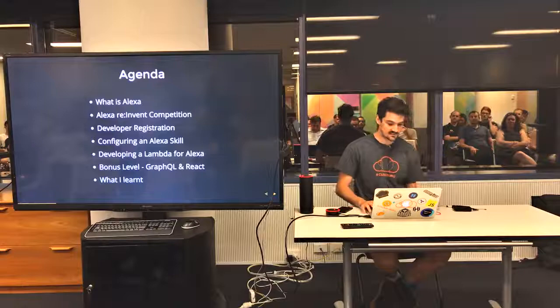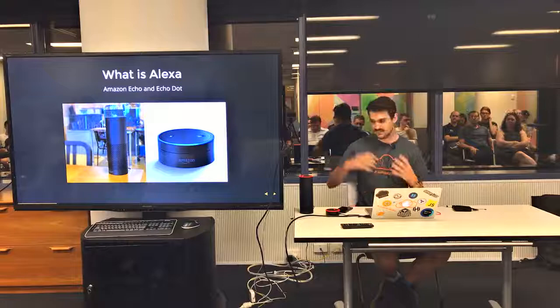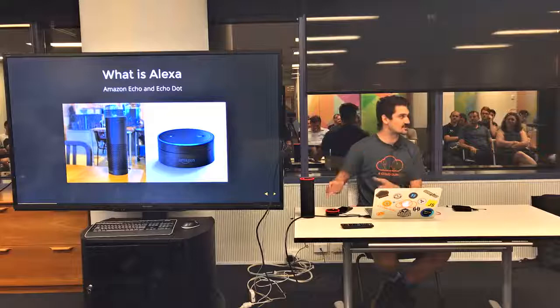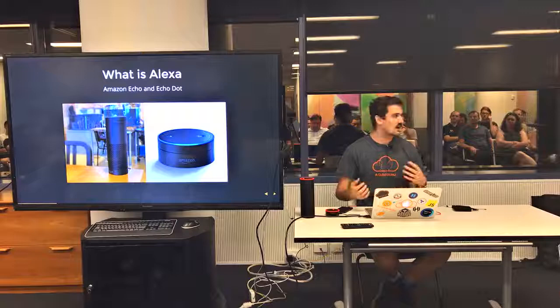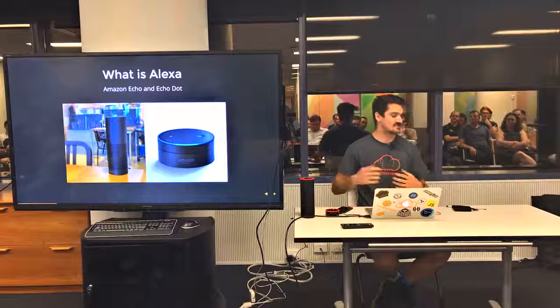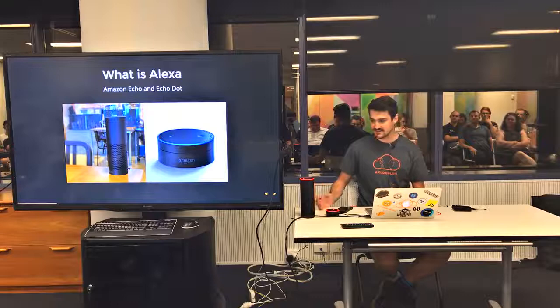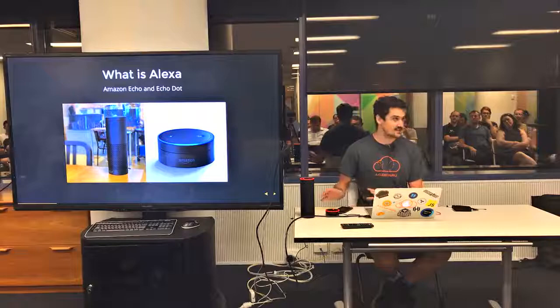So what is Alexa? Alexa is the thing inside these two devices here — the Amazon Echo and the Amazon Echo Dot. It's kind of like IoT meets chatbot. It's a conversational UI widget that allows you to talk to these devices and ask it to do things, or more likely command it to do things. It's a great piece of equipment but unfortunately it isn't available in Australia yet, but it will be coming sometime soon.